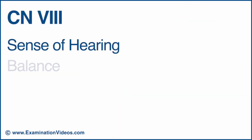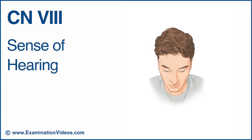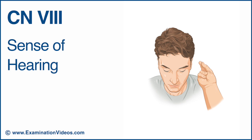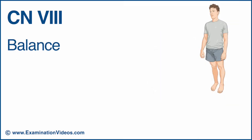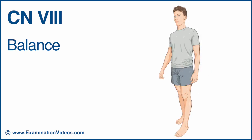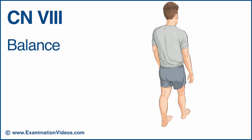To test cranial nerve 8, examine the sense of hearing and balance. To test the sense of hearing, with the patient's eyes closed, ask them to indicate in which ear they can hear your fingers rubbing together. Test each ear separately. Another test for cranial nerve 8 is to check for balance. Ask the patient to first stand with their feet together, then walk across the floor and turn and walk back.